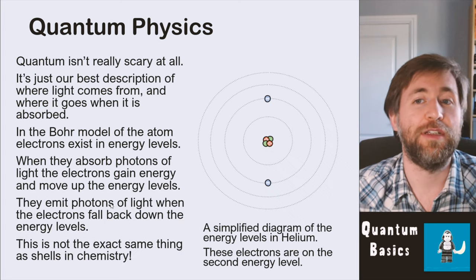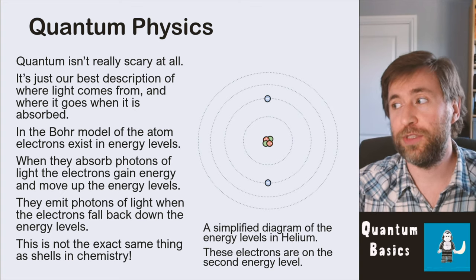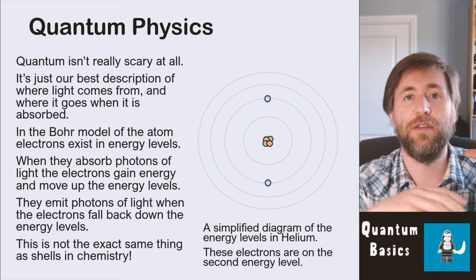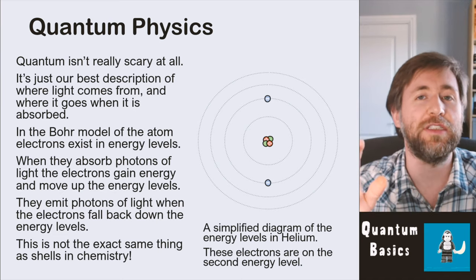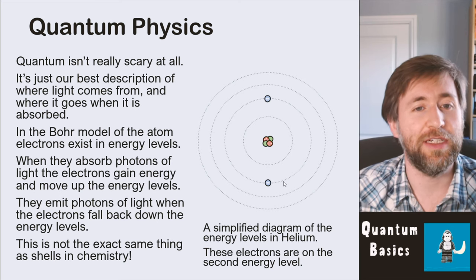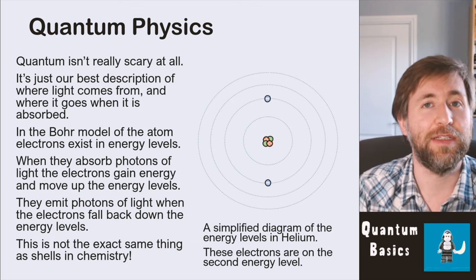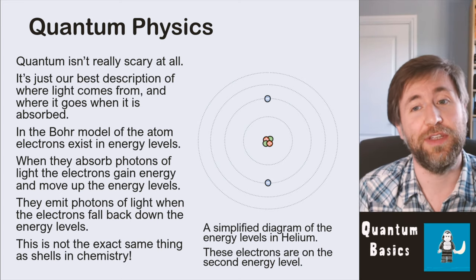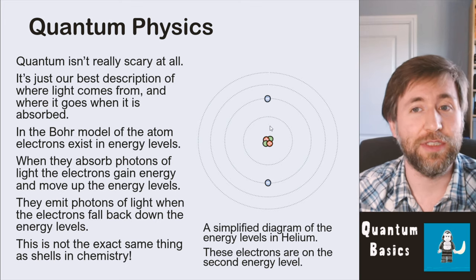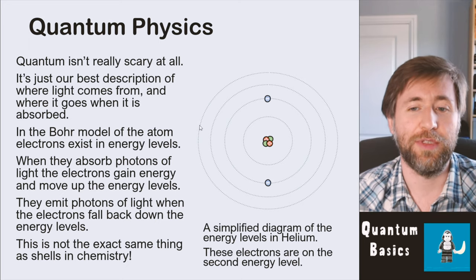You'll be familiar with the Bohr model — protons and neutrons in the nucleus, with electrons orbiting in energy levels. In chemistry they call them shells, but we need to divorce the idea of a shell in chemistry from an energy level in physics. You don't need to worry about shells and orbitals at A-level, just the energy levels. It's actually about the electrons' potential energy within the atom — not necessarily how far away or close they are — and it's not exactly the same as shells in chemistry.